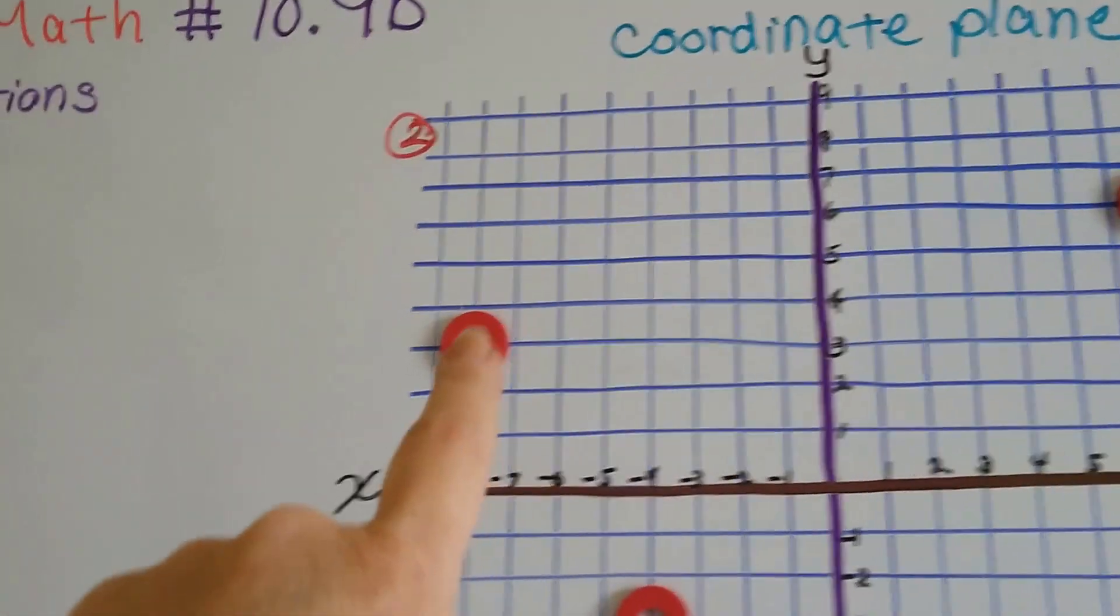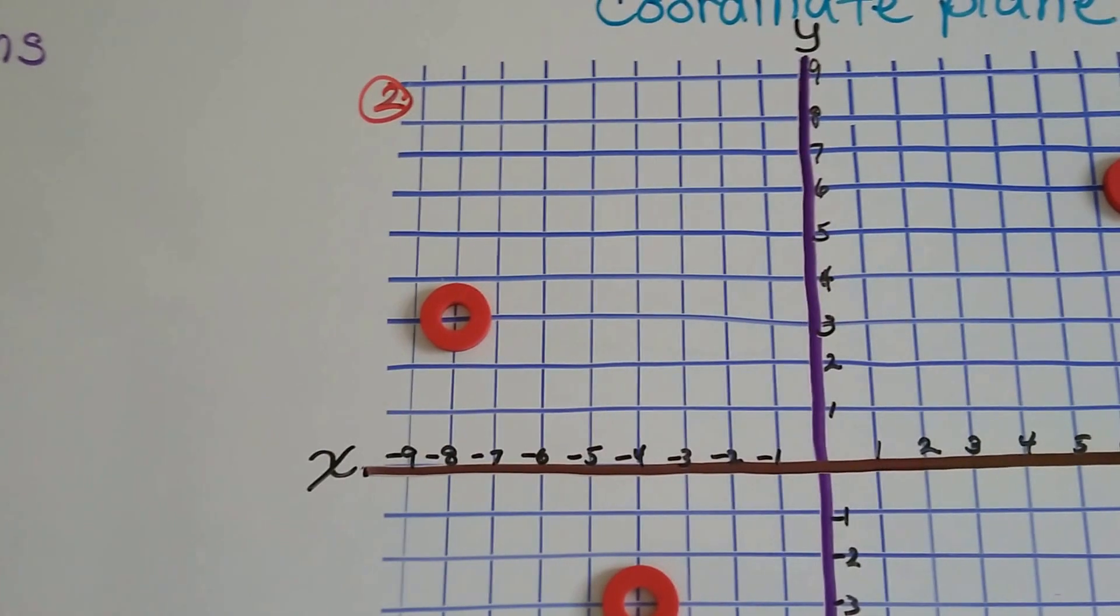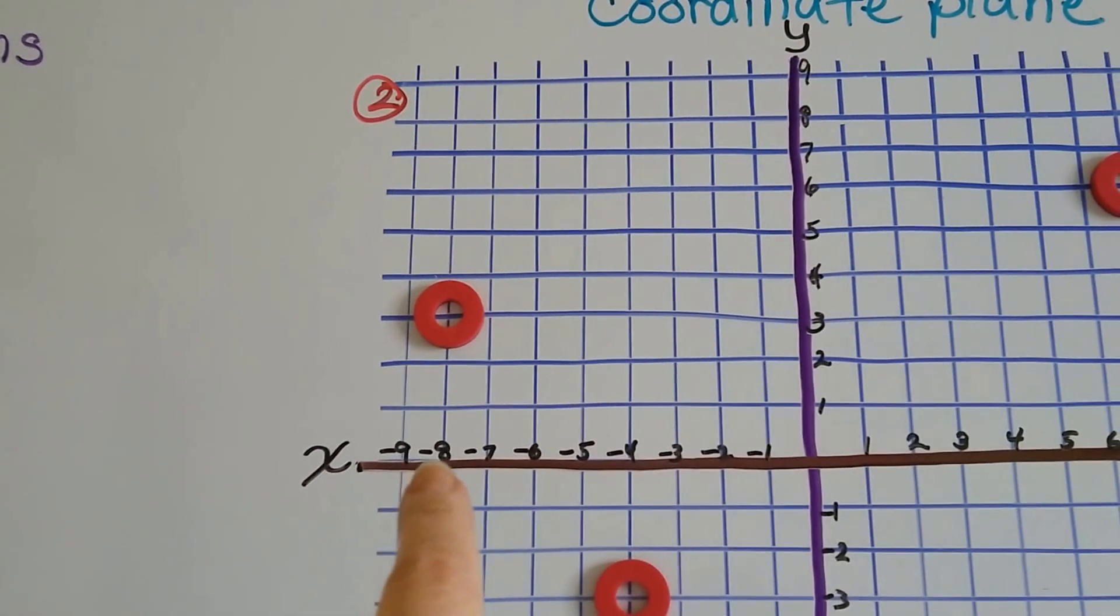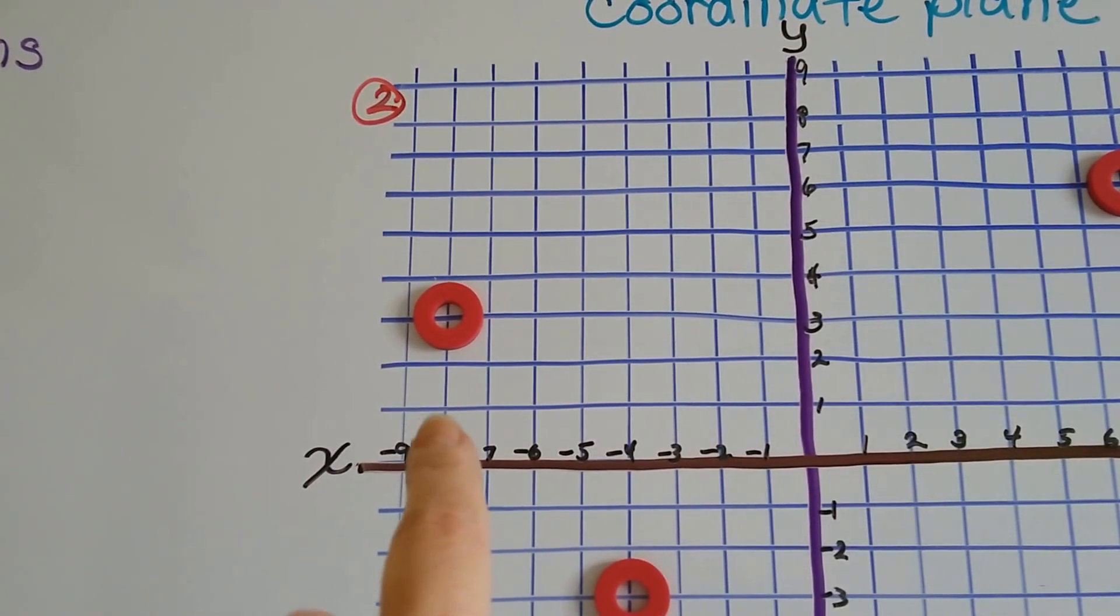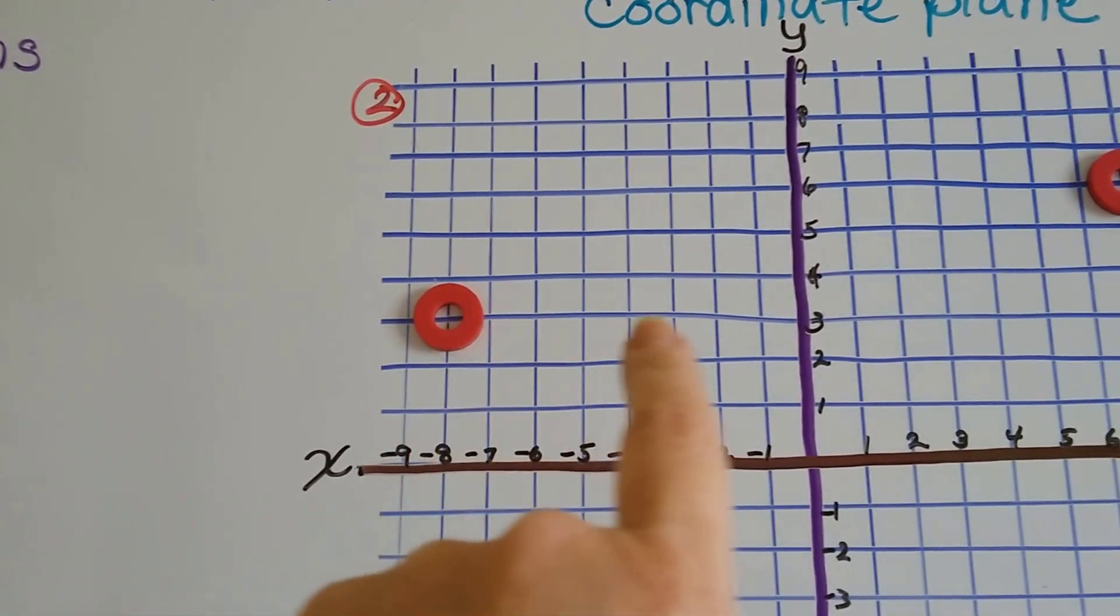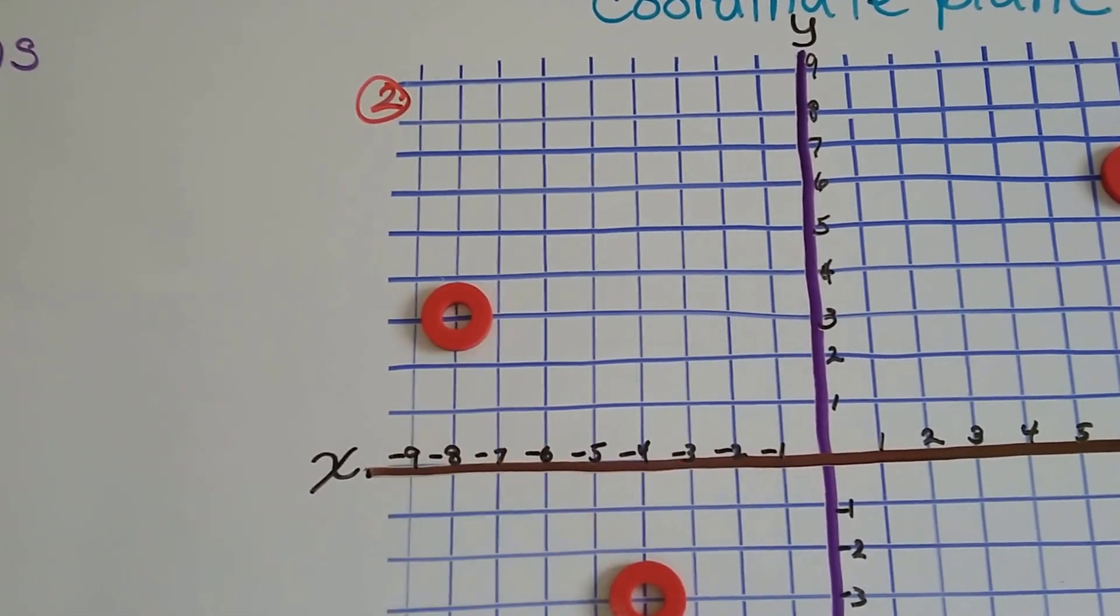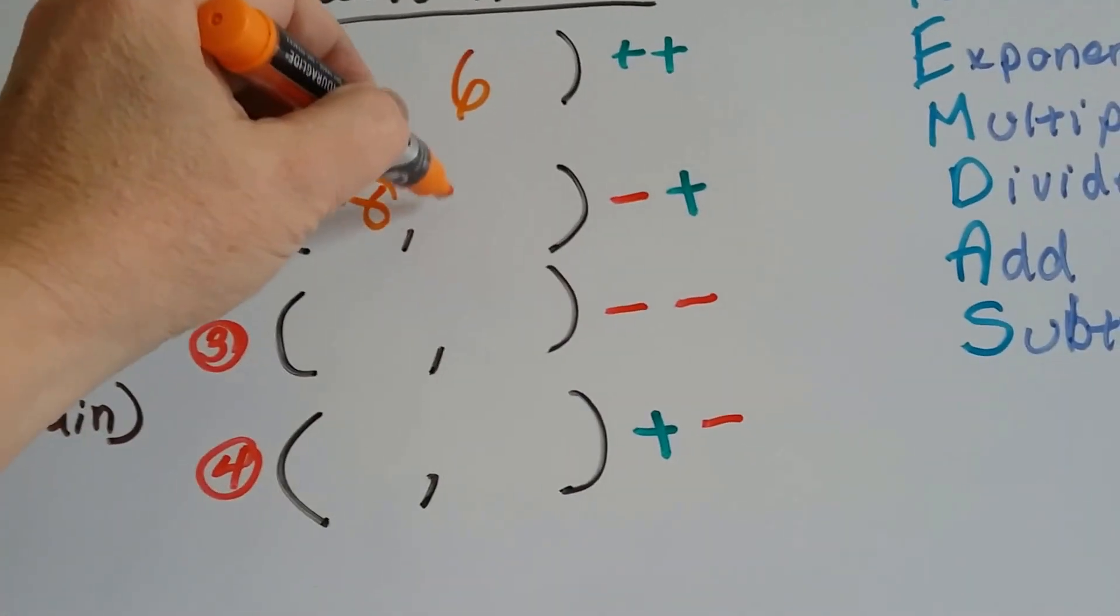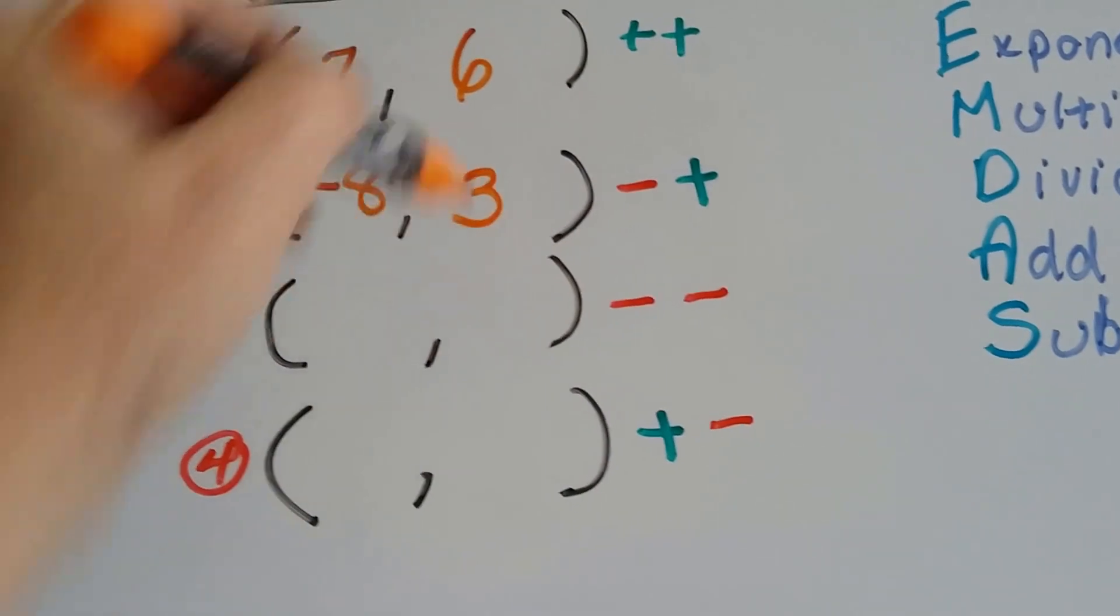Now, in quadrant two, can you tell where that one is? We start with the x-coordinate first. So, it's at a negative 8 and it crosses at the y3. So, it's negative 8 comma 3.